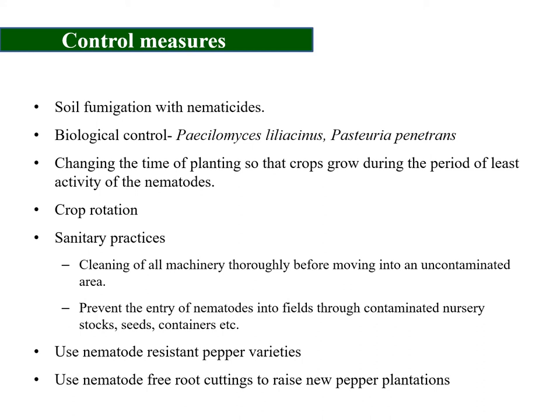Changing the time of planting so that crops grow during the period of least activity of the nematodes. Crop rotation using crops which are resistant to nematodes. Sanitary practices — all machinery should be carefully cleaned before moving into an uncontaminated area. Prevent the entry of nematodes into fields through contaminated nursery stocks, seeds, and containers. Use nematode-resistant pepper varieties, and use nematode-free root cuttings to raise new pepper plantations.